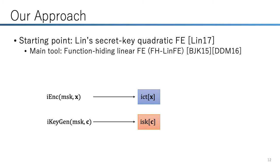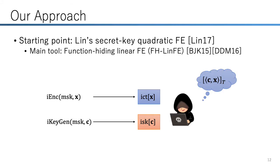The main tool of our scheme is function-hiding linear FE. In function-hiding FE, a secret key hides the underlying function, as well as the ciphertext hides the underlying message. So the polytime adversary can learn only the inner product of c and x from the ciphertext of x and the secret key for c. Specifically, we use a function-hiding linear FE scheme where a decryption value is output on the exponent of the target group of pairing groups.